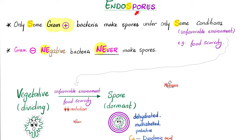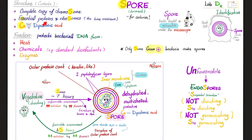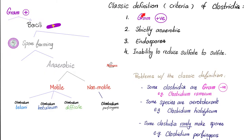Clostridium botulinum is a spore-forming bacterium. Recall that spores can be formed by some gram-positive bacteria — never by gram-negatives. Regarding spore structure and function: structurally, do not forget calcium-dipicolinic acid. Functionally, spores provide protection of the bacteria from unfavorable environmental conditions. The classic definition of Clostridia: gram-positive, strictly anaerobic, spore-forming, but unable to reduce sulfate to sulfite.